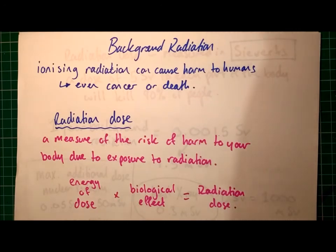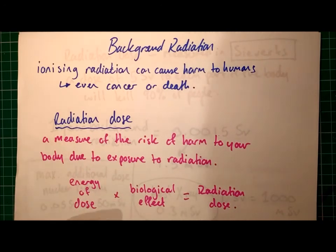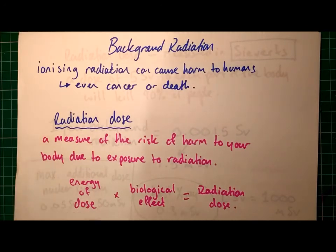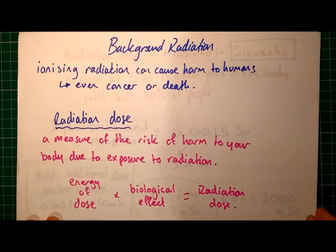But also what's known as the biological effect. You don't need to know the detail of this equation, but I thought it might be interesting to you. The biological effect takes into account mostly the fact that alpha radiation is much more damaging to the body than gamma and beta. These two combined make up what's considered your radiation dose.